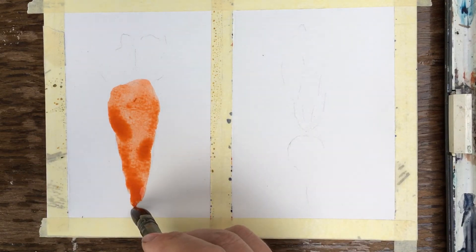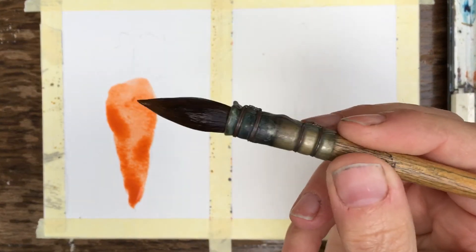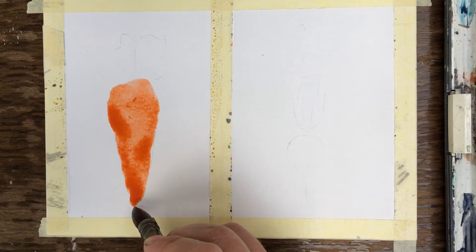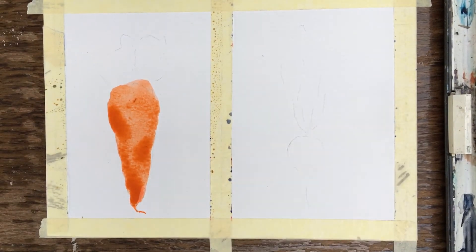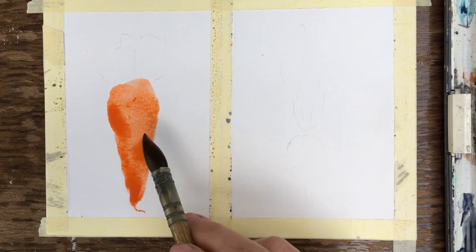The benefit of using these Chinese brushes is that they do come to a nice point, which means that you can put little squarely details on like so. That's all we're going to do for the carrot for the moment. We're going to leave it to dry just a touch.